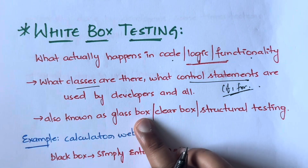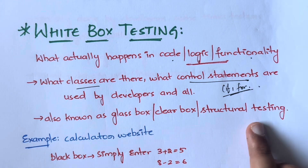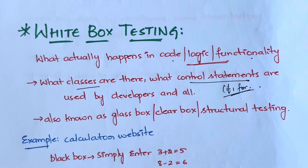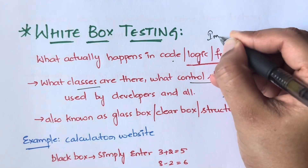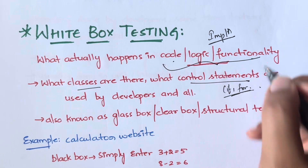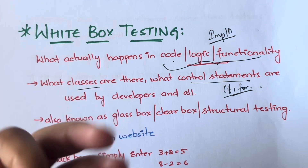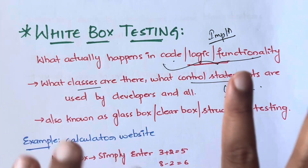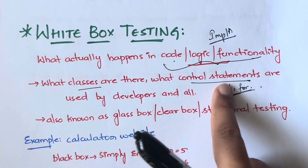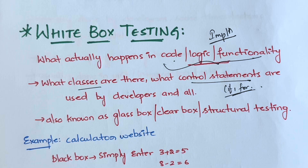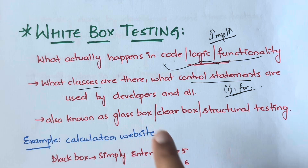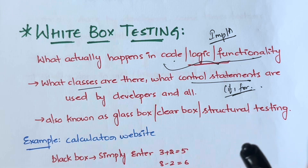White box testing is also known as glass box testing, clear box testing, or structural testing. Basically, you will be able to see the entire implementation — that means code, logic, and functionality — and every detail. All loops, control statements, if statements, switch-case — whatever is there, you can see that.